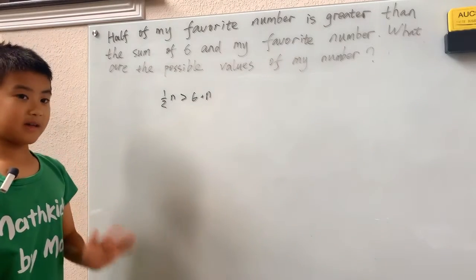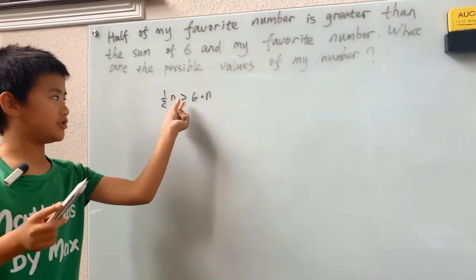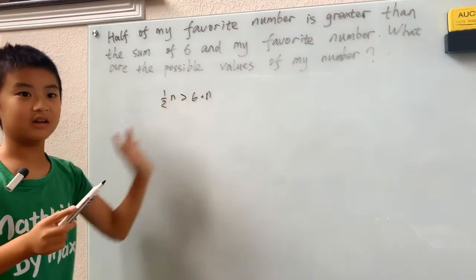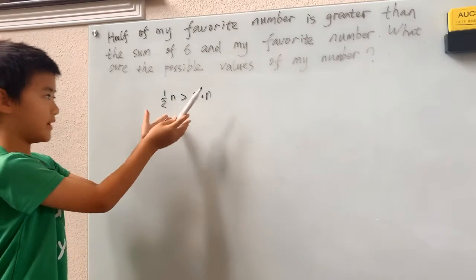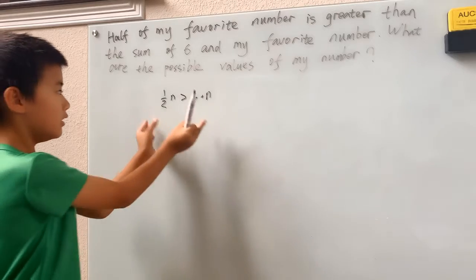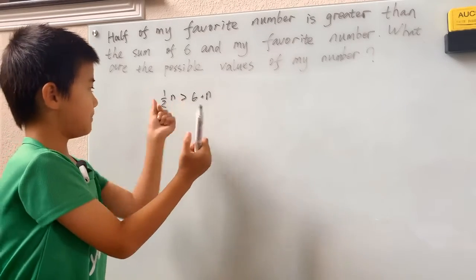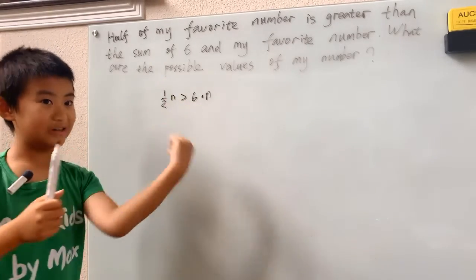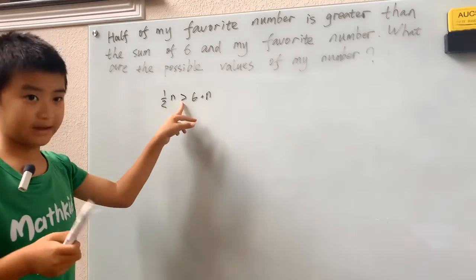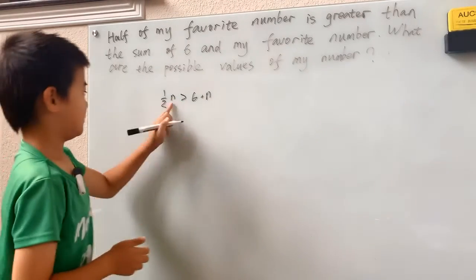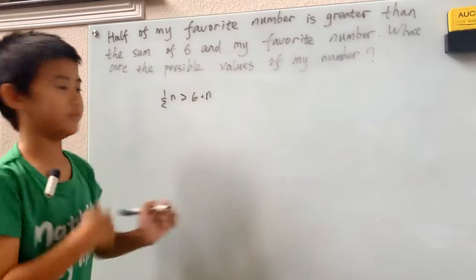But when you're multiplying or dividing by negative numbers, you have to change the direction of inequality. For example, if I wanted to multiply by negative two here, when I get my results, I have to flip that greater than sign to a less than sign. Because if I keep that, that's not going to be true. And we'll talk about why in a later video.